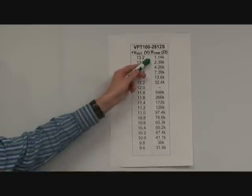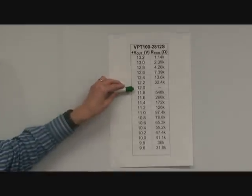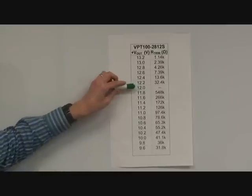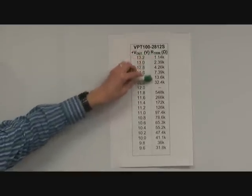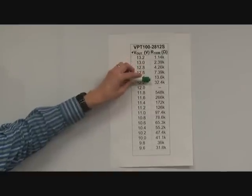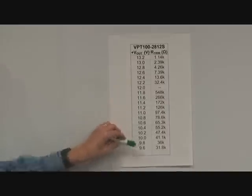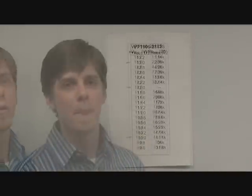In the right column, you see the value of R trim that needs to be connected in order to achieve this output voltage. You'll see in the middle, 12 volts is the nominal output voltage for this converter. If you want to trim higher, you need to connect this value of resistor to the R trim up location. And likewise, if you need to trim down from the nominal voltage, you need to connect the resistor in the R trim down location.